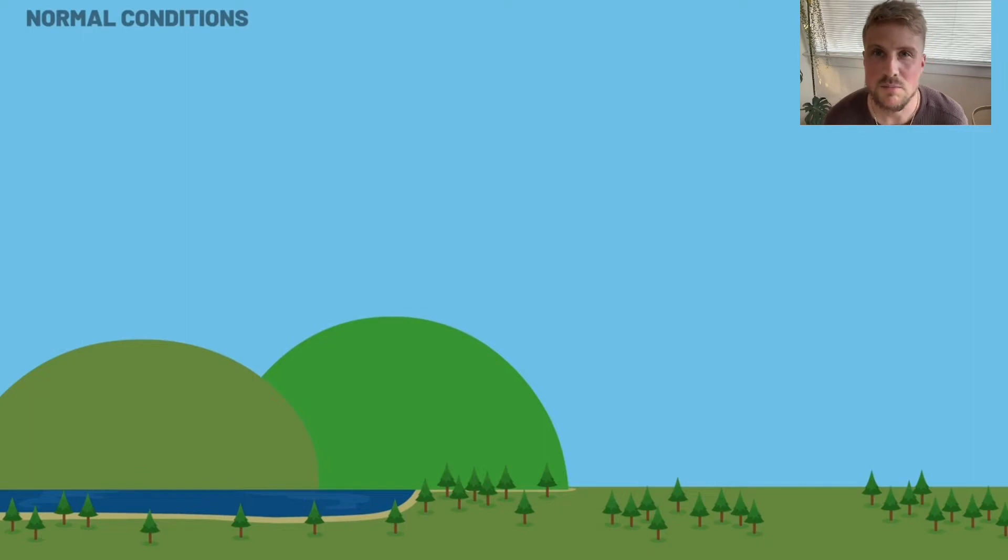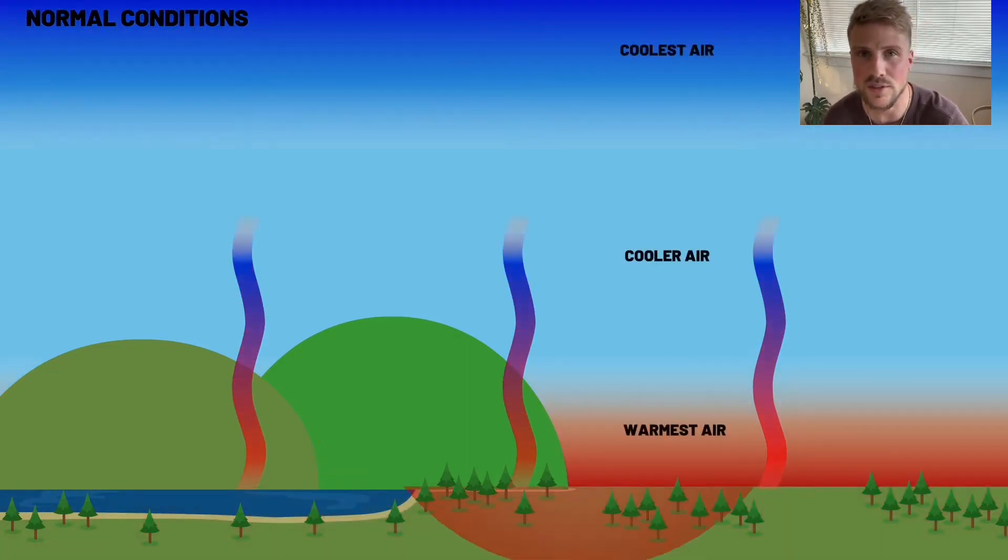The air in the atmosphere is mostly heated by the earth's surface. The sun's rays beam down and heat the earth, and the earth then radiates that heat back into the atmosphere, heating the air closest to the earth. This leads to the normal condition of the warmest air near the surface, less warm air as you go up, and the coolest air in the upper atmosphere.